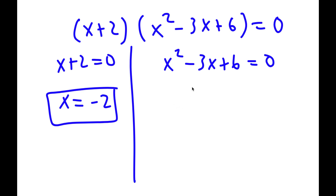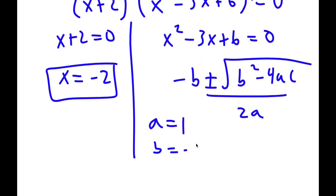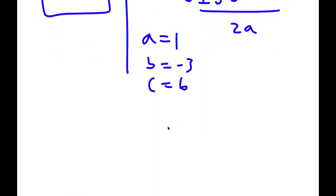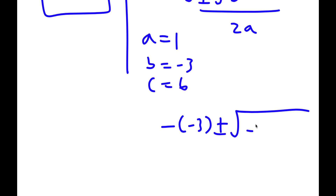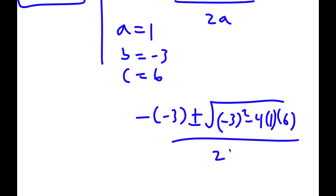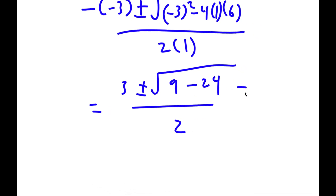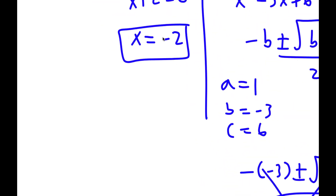For x squared minus 3x plus 6 equals 0, to solve this we have to use the quadratic formula, which is negative b plus or minus the square root of b squared minus 4ac all over 2a. In this case, a is 1, b is negative 3, and c is 6. This simplifies to 3 plus or minus the square root of 9 minus 24 over 2. Since 9 minus 24 is negative 15, you can't take the square root of a negative number, so this gives no real solution, and my only solution is x equals negative 2.